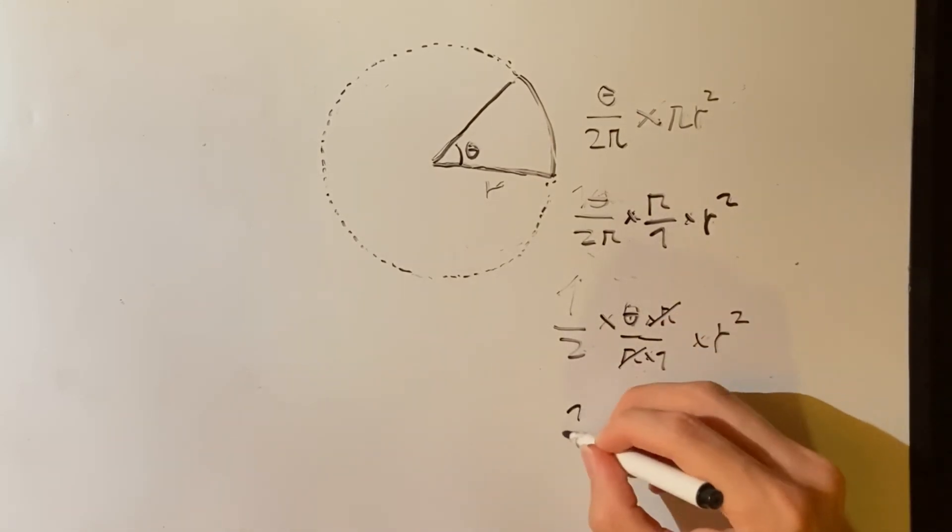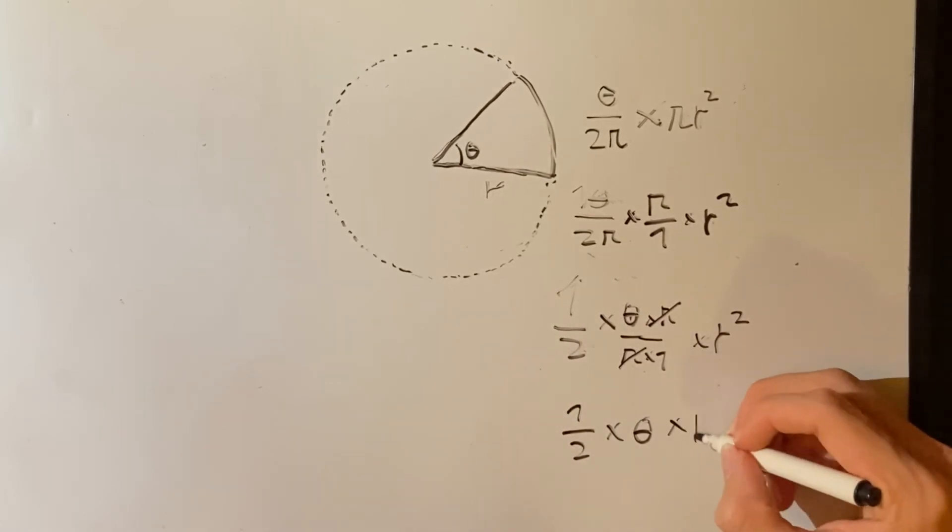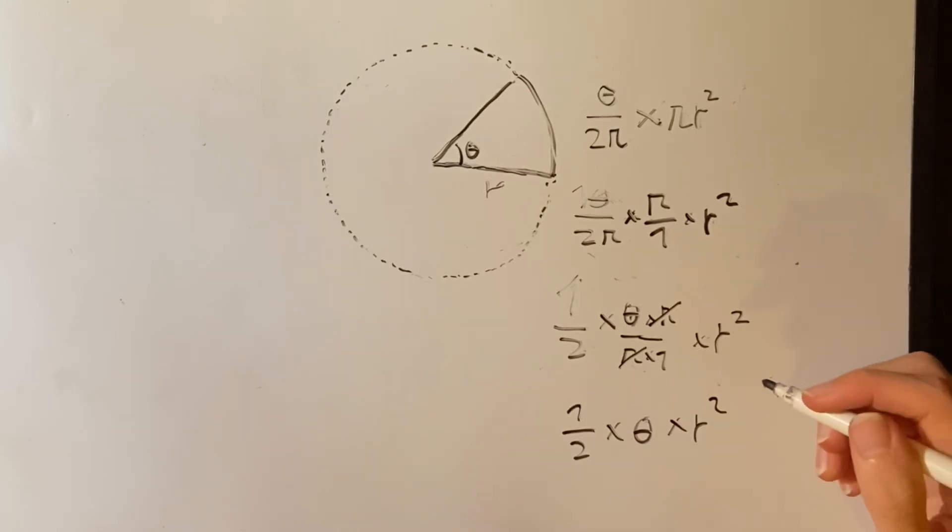And we are left with 1 over 2 times theta times r squared, which is our formula. And that is where the 1 over 2 comes from.